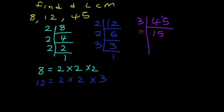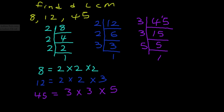3 can no longer go, so we try the next prime number, which is 5. 5 and 5 is 1. So the prime factorization for 45 is 3 times 3 times 5. So what's the LCM?